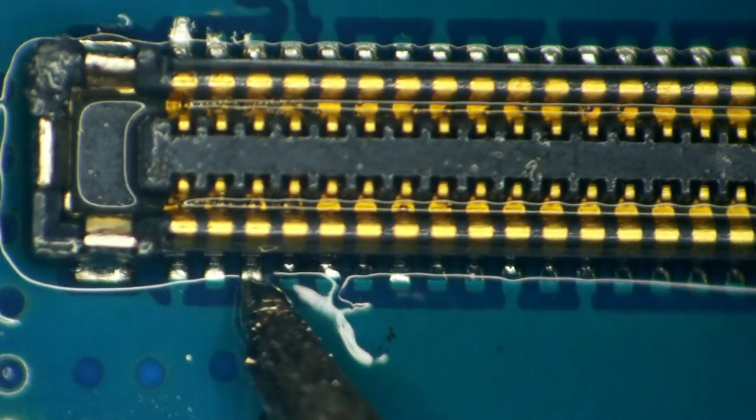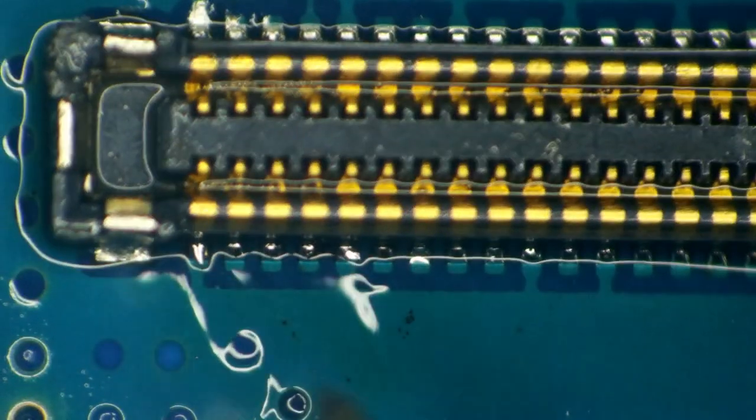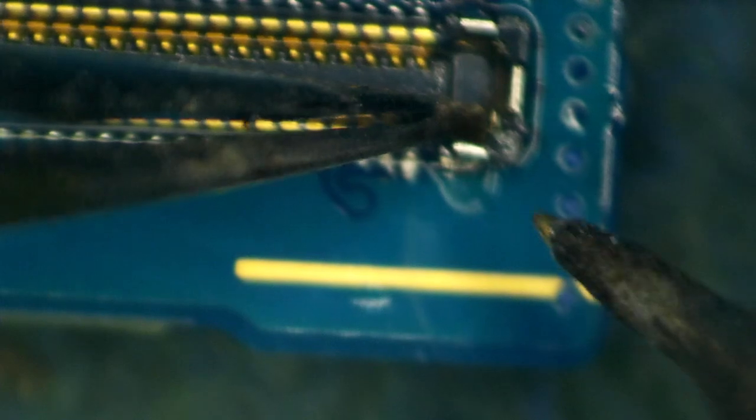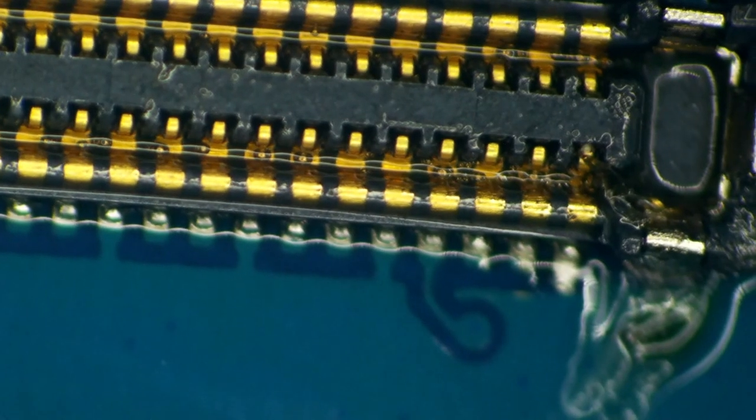We're just going to finish this row here and then flip it around and do the other side. I knew this smashed end cap was going to be a problem. That's nothing a little heave-ho and a micro pencil can't fix. Oh yeah baby. There we go. Yeah it looks brand new. Perfect.